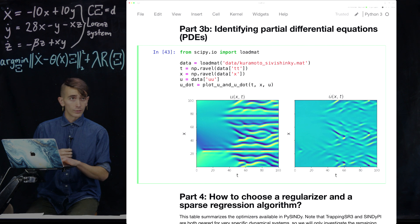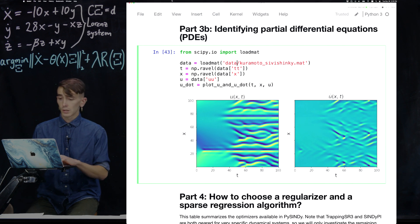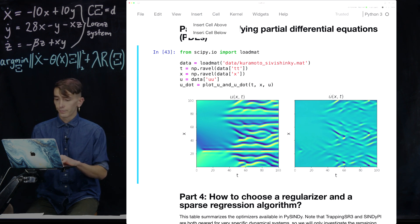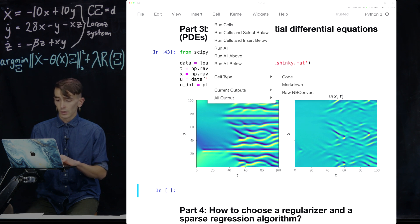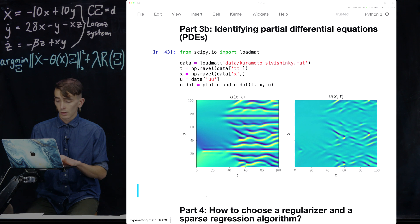So what I've done so far is just load in some partial differential equation data that we have lying around for the Kuramoto-Sivashinsky equation. If you don't know what that is, let me just type it out real quick. So this is a partial differential equation that looks like this.